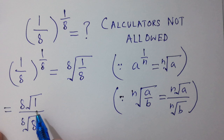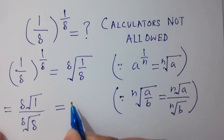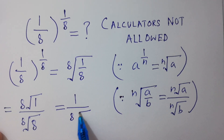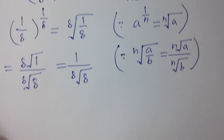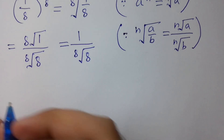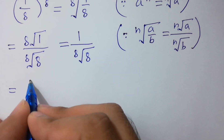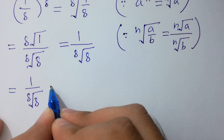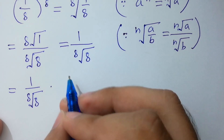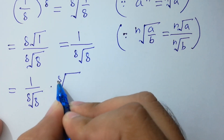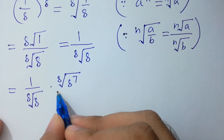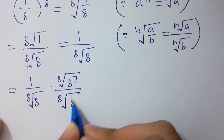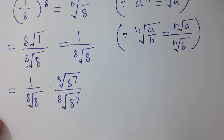Here, the 8th root of 1 equals 1, so we have 1 over the 8th root of 8. In the next step, we multiply by the 8th root of 8 to the power 7 over the 8th root of 8 to the power 7 to simplify it faster.